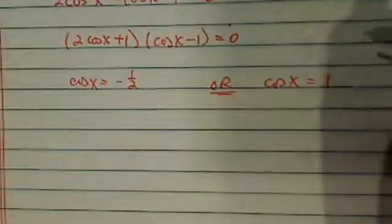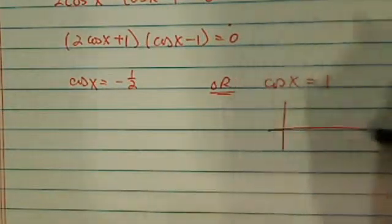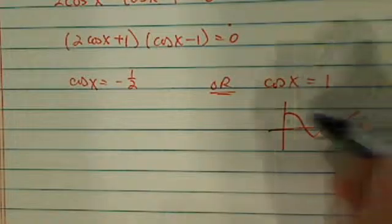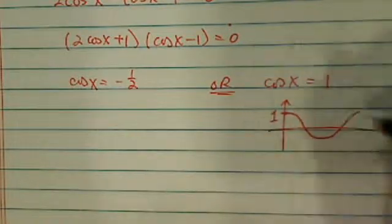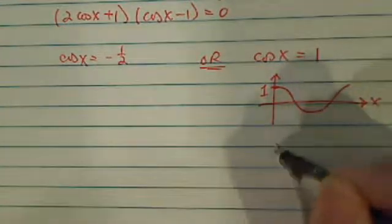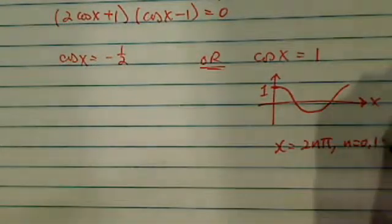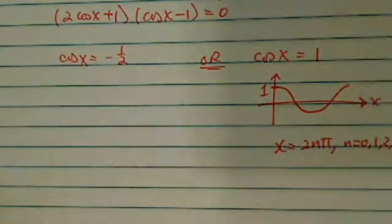Let's solve the easy one first. Cosine of x equal to 1. Now you remember the cosine curve starts at 1 going downward. So this is 1, and this is x. So obviously our x is a multiple of 2n pi, where n equal to 0, 1, 2, so on and so forth, all the integers.